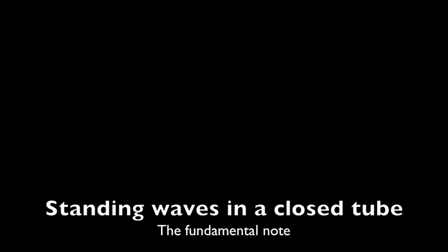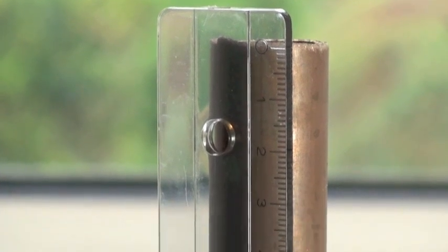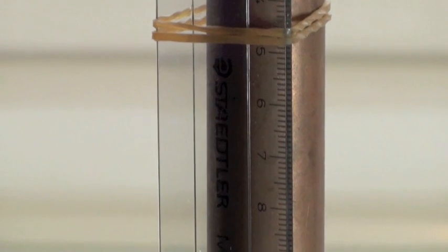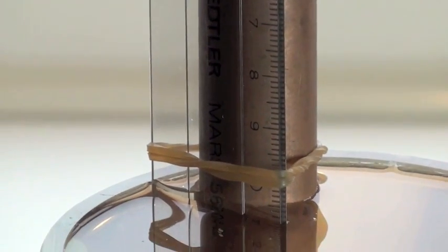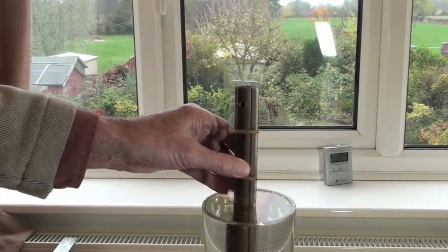The tube is put in the jar because by raising and lowering the tube in the jar, we can alter and easily measure its length. We can use this arrangement together with a source of sound which produces a standard note, in this case a tuning fork.